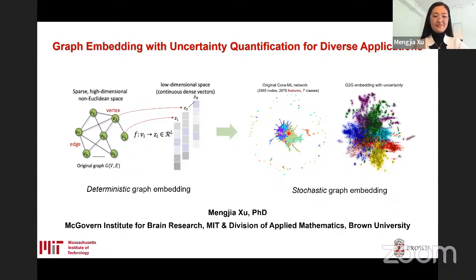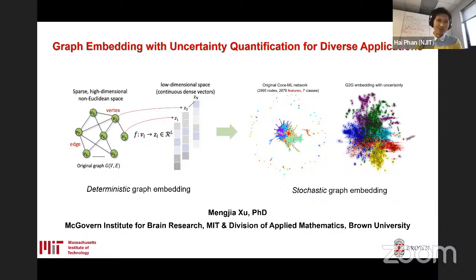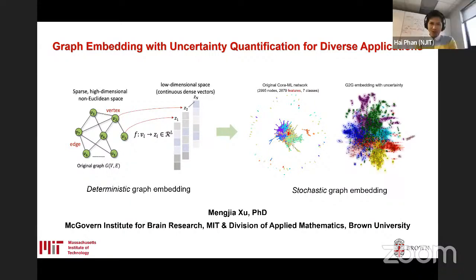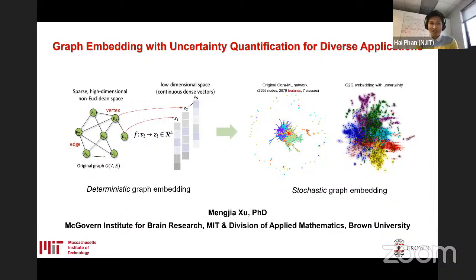Good afternoon everyone, thank you for coming to our data science department seminar. It's my pleasure to introduce Dr. Mengja Su. Dr. Su is currently a postdoc associate at the McGovern Institute for Brain Research at MIT and also at the Division of Applied Mathematics at Brown University. Dr. Su's research is at the intersection of computer science, neuroscience, and bio-imaging.